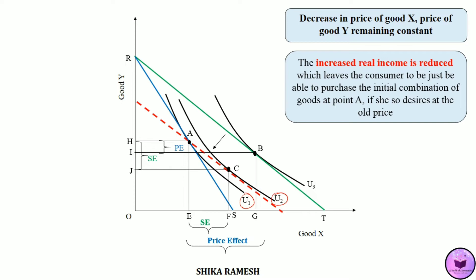The rest of the amount — that is, FG amount of good X purchased by the consumer — is because of the income effect. The movement from point C to B shows the income effect. At point C, the consumer's real income is reduced, whereas at point B, the increased real income is shown in the RT budget line. Due to this increase in real income or purchasing power, the consumer is purchasing the additional FG amount of good X, which is the income effect.